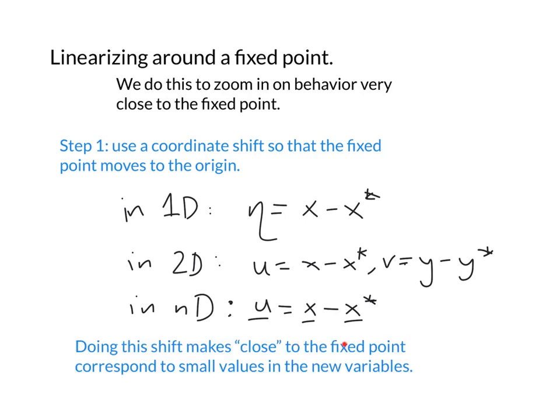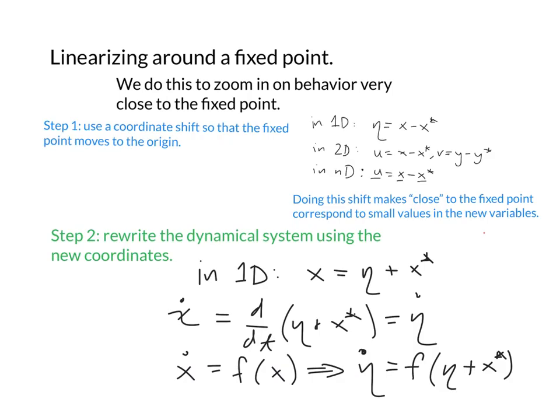Doing this shift makes close to the fixed point correspond to small values in our new variables. My next step is going to be to rewrite the dynamical system using my new coordinates.